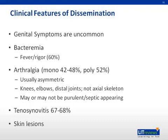Finally, nonspecific skin lesions are frequently present in disseminated infection. These can manifest in almost any type of skin rash or lesion, including macules, papules, hemorrhagic lesions, bullae, and others.